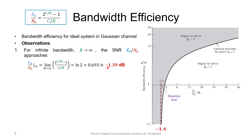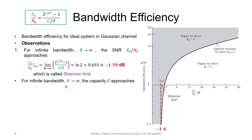The value 0.693 corresponds to −1.59 dB in the dB scale. So if we assume infinite bandwidth, the minimum required Eb/N₀ is −1.6 dB. This is called the channel limit. There is no good communication system that can operate with Eb/N₀ below this limit. This limit is obtained by taking bandwidth to infinity, exploiting the trade-off between bandwidth and Eb/N₀ to find the minimum possible energy per bit.